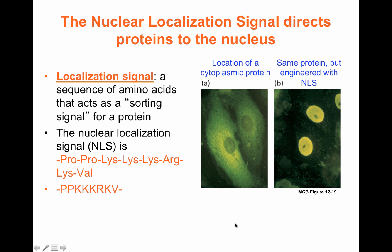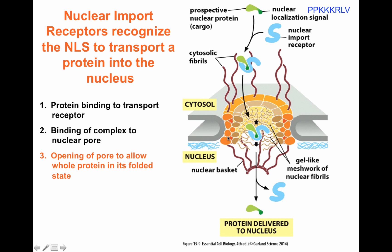In order to recognize that protein sequence, you need a receptor — called the nuclear import receptor. A protein destined to be transported has a nuclear localization signal in dark green, which is bound by the nuclear import receptor and transported across the nuclear pore complex into the nucleoplasm. There, it will be disengaged and the protein is ready to do its job. You require protein binding to the transport receptor, the transport receptor must engage the nuclear pore, and the nuclear pore must open to allow the protein to move inside.